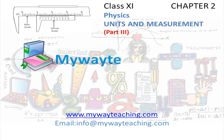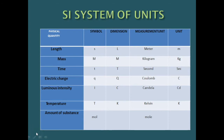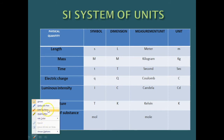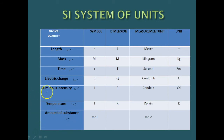This video is brought to you by mywayteaching.com. In this part, we are going to discuss about the SI system of units. As I already told you before, there are 7 fundamental base quantities: length, mass, time, electric charge, luminous intensity, temperature, and amount of substance.